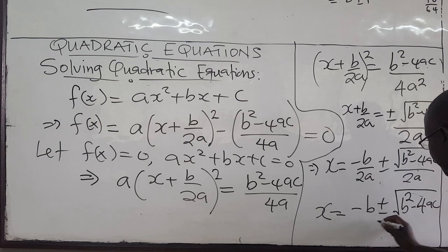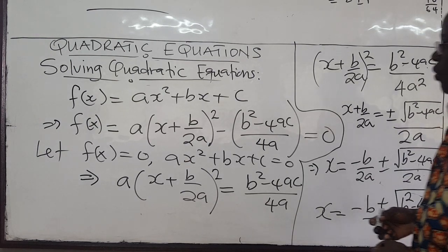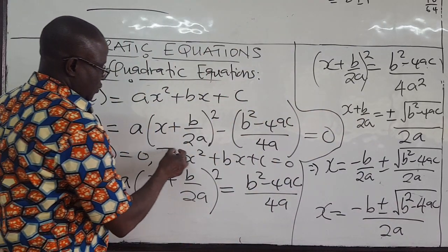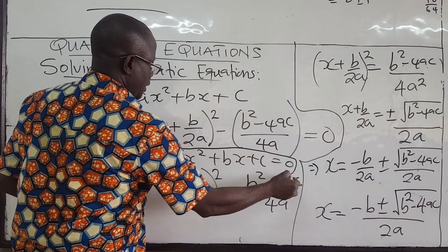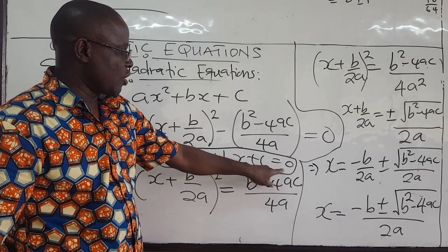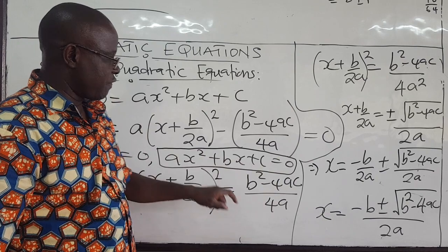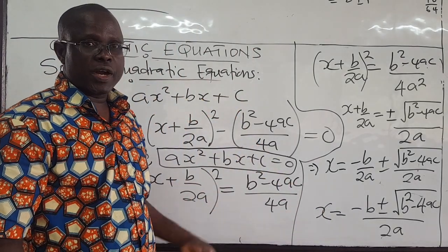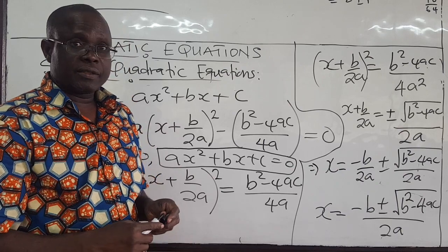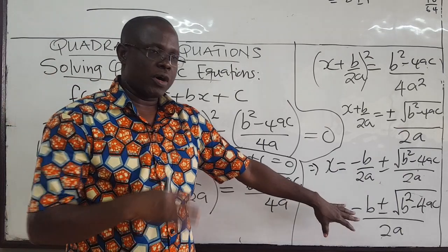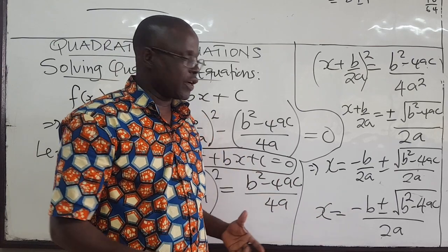The square root all over 2a. In other words, to solve a quadratic equation ax² + bx + c = 0, the values of x are given by this expression. And you can use it whether or not you can factorize it — this works for all quadratic equations in general.